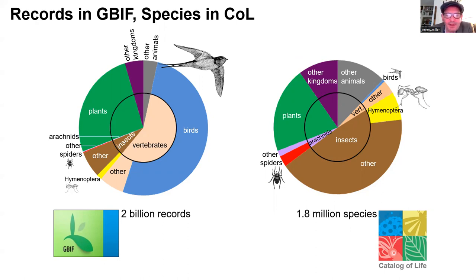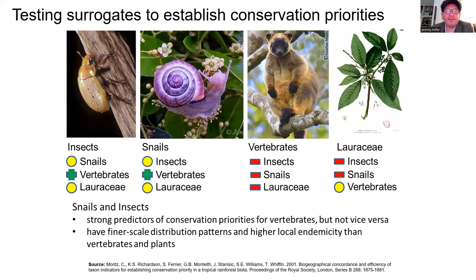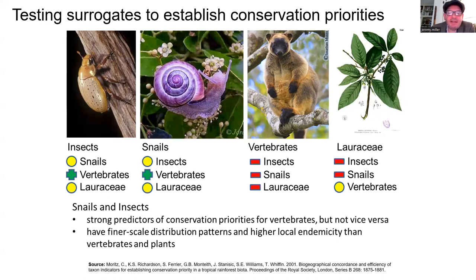This raises an important question: do the taxonomic groups that dominate the global biodiversity data sphere approximate the general pattern of biodiversity and endemism across all taxonomic groups, including arthropods? The answer is we really don't know yet, but there are some indications that should raise concerns. A study in Australia looked at the total number of species for four taxonomic groups — insects, snails, vertebrates, and the plant family Loraceae — across a reasonably large area of wet tropical rainforests.